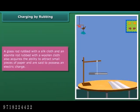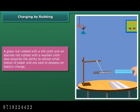A glass rod rubbed with a silk cloth, and an ebonite rod rubbed with a woolen cloth, also acquire the ability to attract small pieces of paper and are said to possess an electric charge.